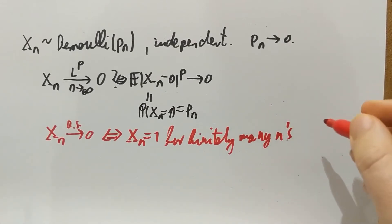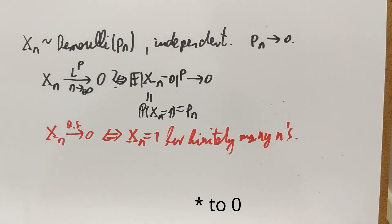If there are infinitely many cases when Xn is one, then that sequence will not converge to zero. If there are only finitely many ones, then after a while everything is zero and we do have convergence.